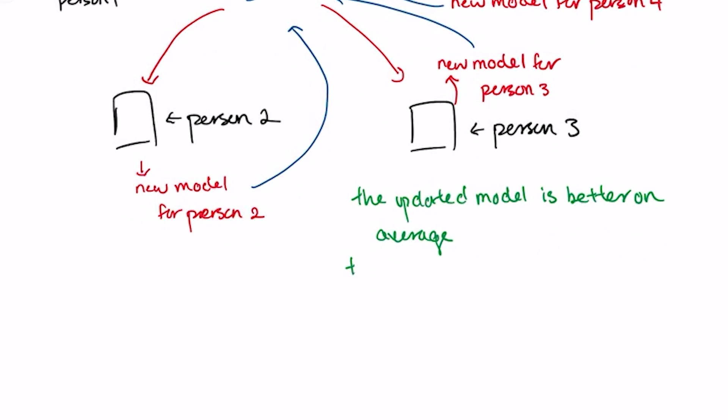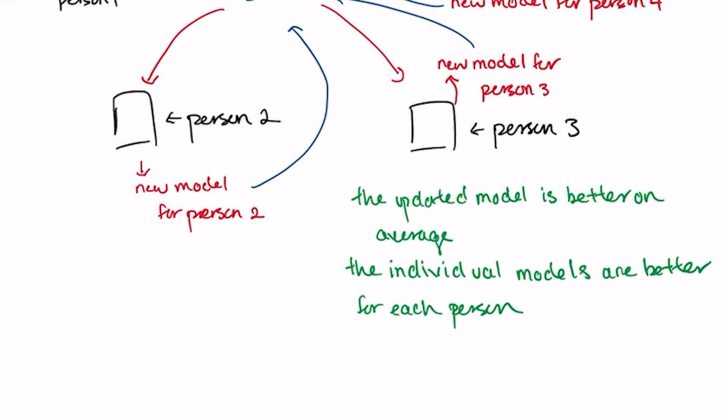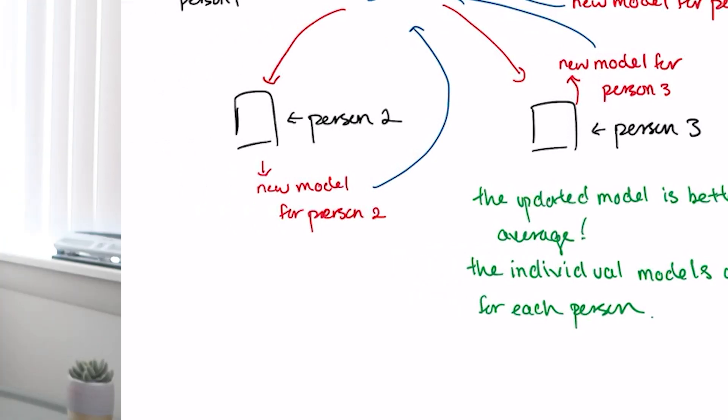Depending on your goals, you might send copies of the global model back to each user's device to be incorporated into their personalized ones for better generalization. At this point, you've used federated learning to create a pretty good global model without ever having seen the data your model was trained on. You've also developed models specific to each user, potentially improving individual performance compared to the global model.